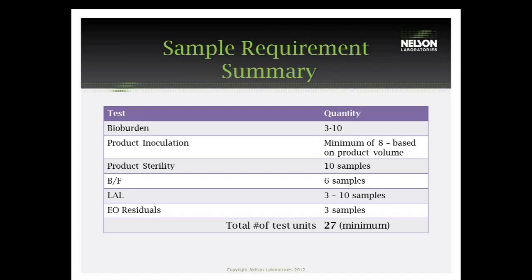In summary, for the total amount of samples you will need: the minimum total is 27 samples for a one cubic meter load or less. That includes 3 samples for bioburden, 8 samples for product inoculation, 10 samples for product sterility, 6 for BF testing, 3 for LAL, and 3 for residuals. The 6 samples for BF testing can come out of the 10 samples for product sterility, and we actually recommend that because then the samples go through the same testing process for both product sterility and BF, easily validating that test.